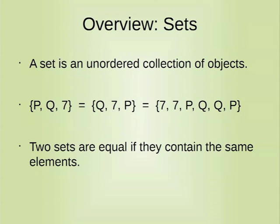And we can say that two sets are equal if and only if they contain the same elements. So we have three sets here: PQ7, Q7P, and 77PQQP with duplicates. These sets are all equal. It doesn't matter what order they're in or how many duplicates they contain. They contain the same three distinct elements.